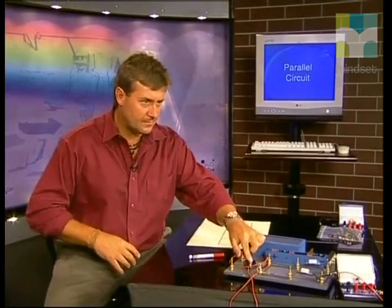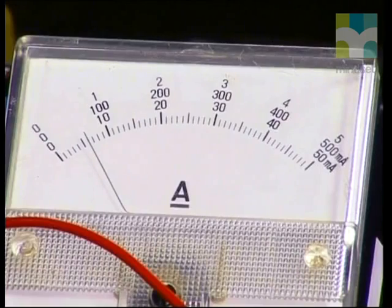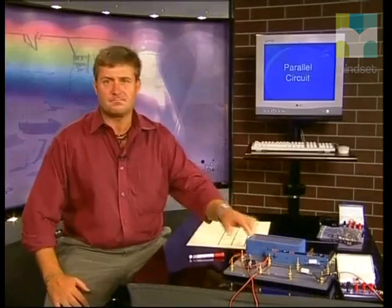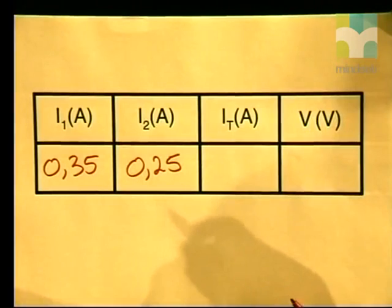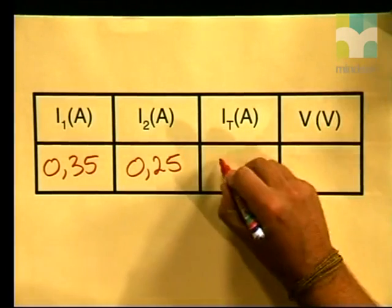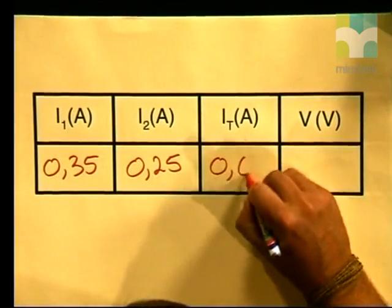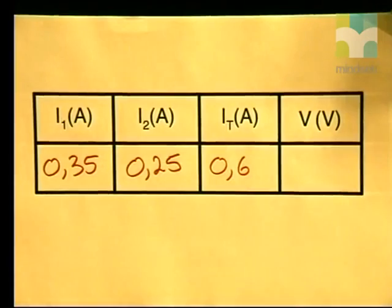Now for our third current reading, which will measure the total current in the circuit. Notice that the reading is now 0.6 amperes. IT stands for the total current in the circuit, which was measured as 0.6 amperes.